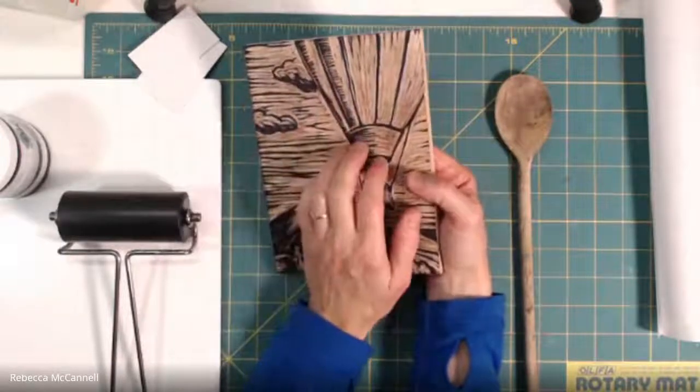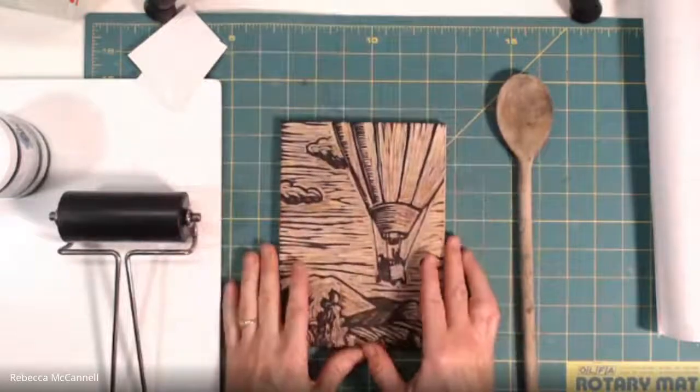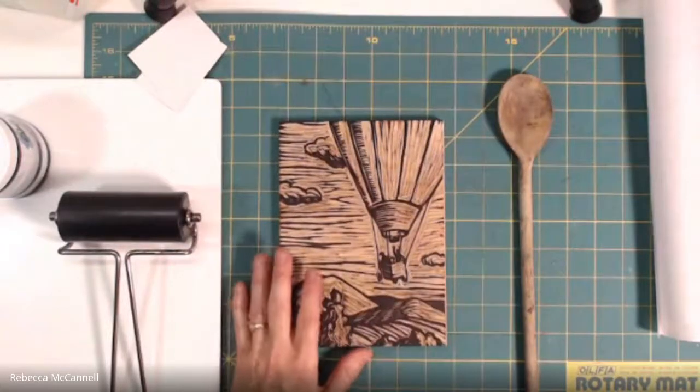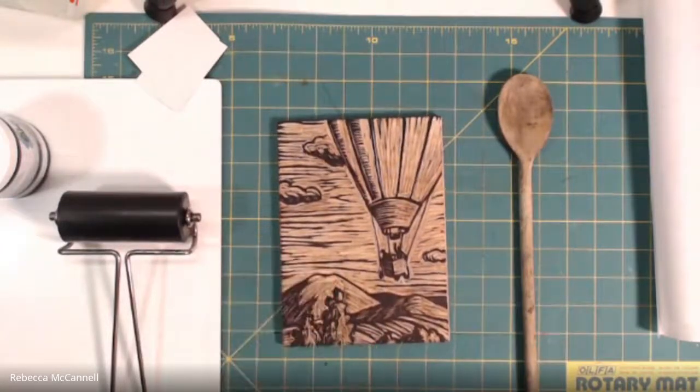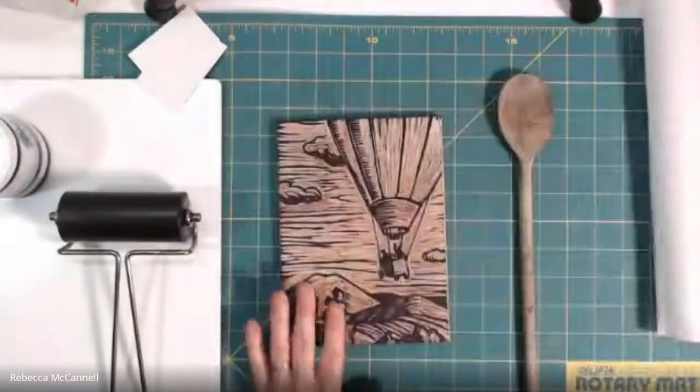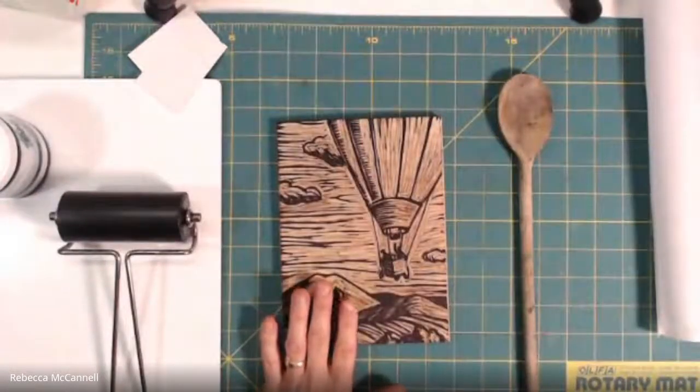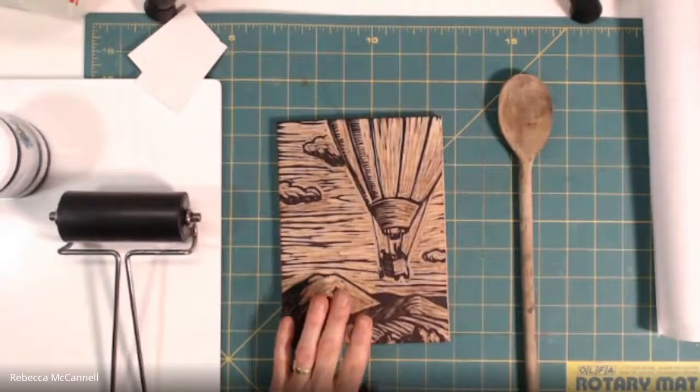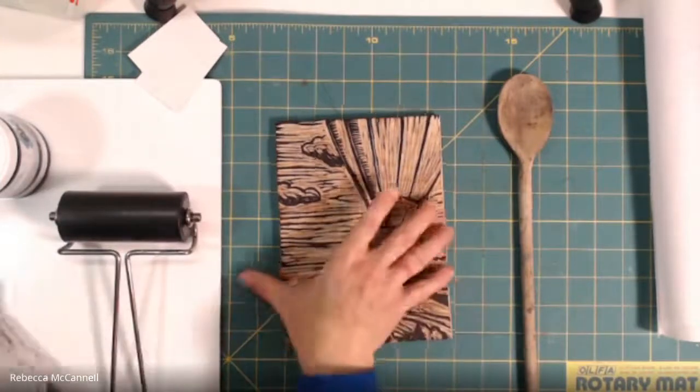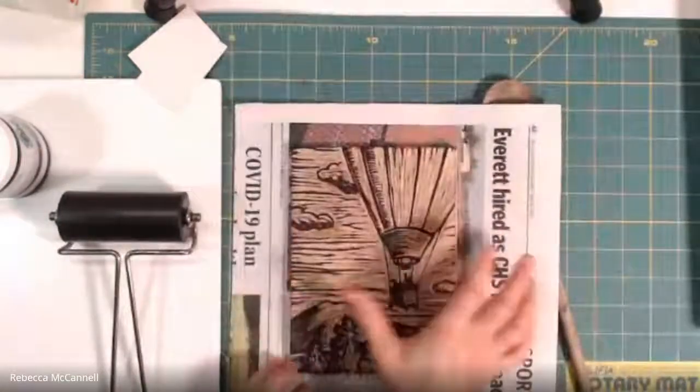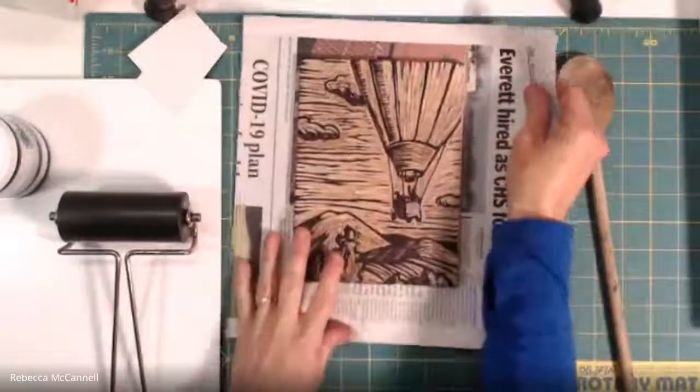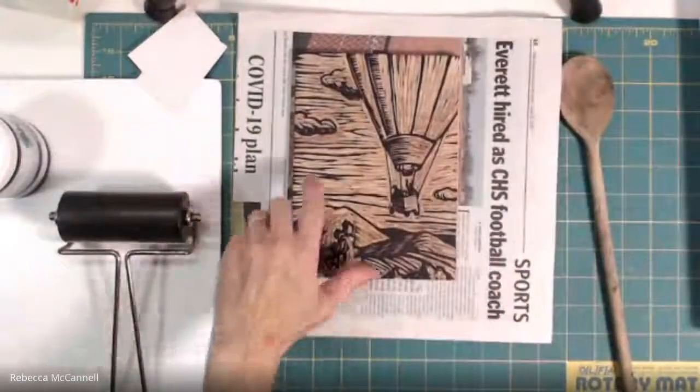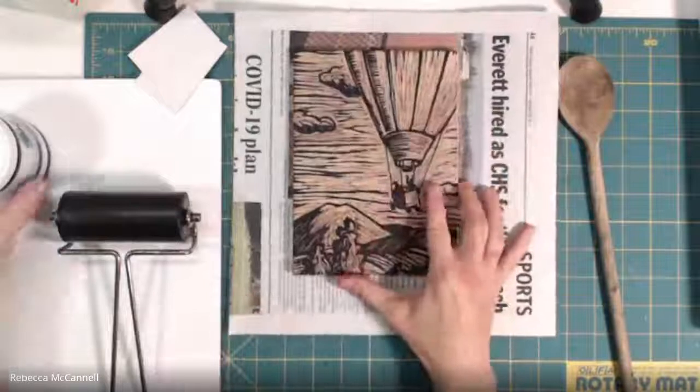Remember to ink your block when it is not in your printing jig. You should have your printing jig off to the side somewhere, but don't use it when you're inking. I'm gonna pull a little bit of newspaper underneath the block so that I don't get ink on my cutting mat.